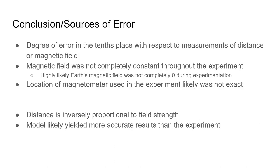Conclusion and sources of error. So starting with error, the degree of error in the tenth place with respect to measurements of distance or magnetic field. So that messes up the numbers and then the magnetic field was not completely constant throughout the experiment. It would fluctuate a little bit.